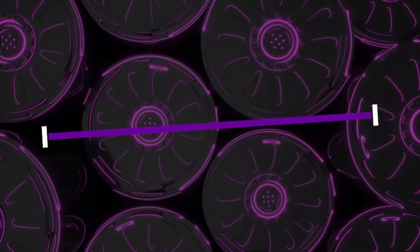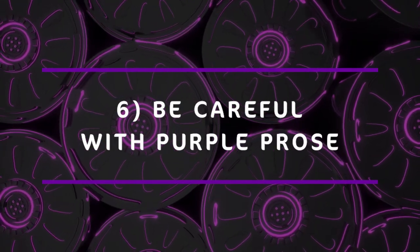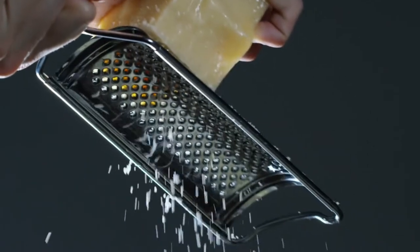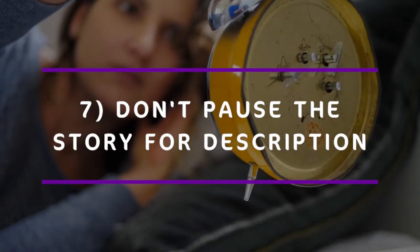Tip number six: be careful with purple prose. Purple prose has its place, but its place is not in character descriptions. You can add a little bit, but you have to tread carefully — when it comes to character descriptions, the bridge over the river of cheese is a thin one.